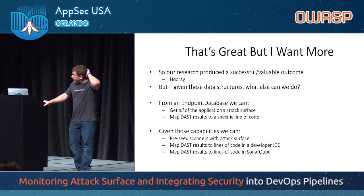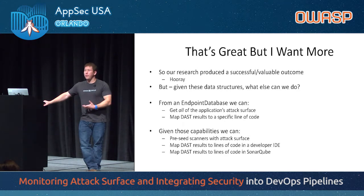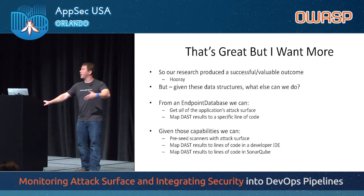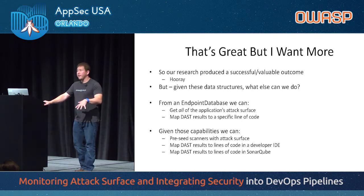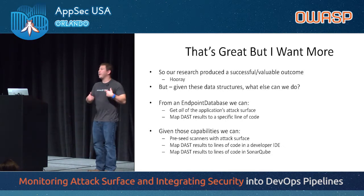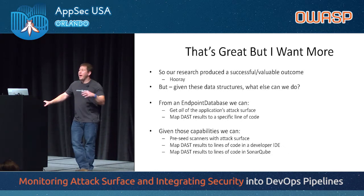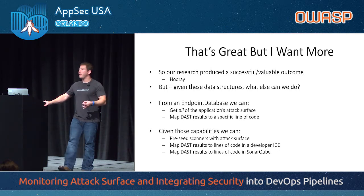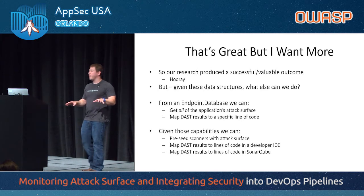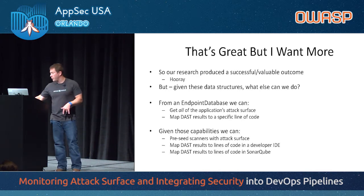If you understand what an application's attack surface is, you can do some really cool stuff with it. If I know all of the application's attack surface, that's valuable if I'm going to do dynamic testing. Instead of the spidering process, I can shortcut that and just say, here's the application's attack surface — this is what you need to test. You don't need to guess what the application's attack surface is, I'll give it to you. And similarly, if I have this data structure and I've done dynamic testing but not static testing, it lets me communicate to the developers where they need to start looking in the source code in order to address an issue.